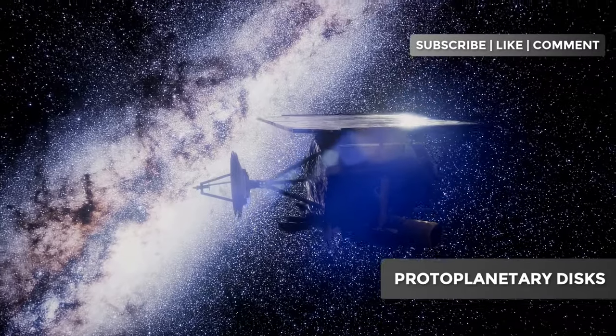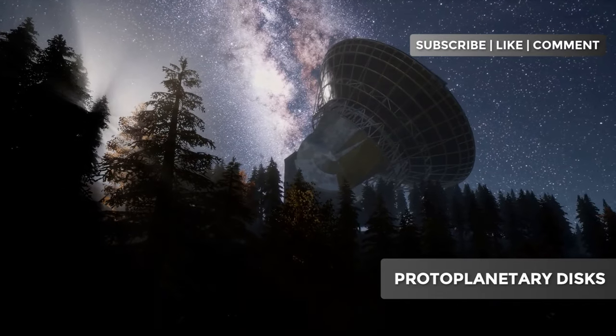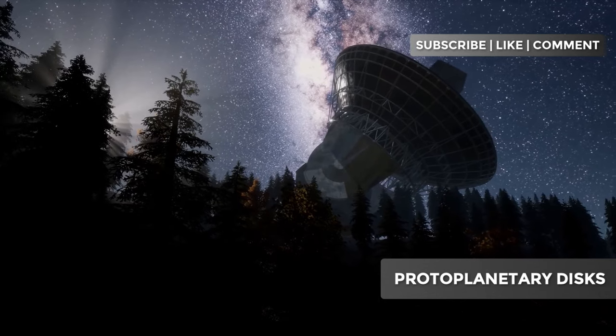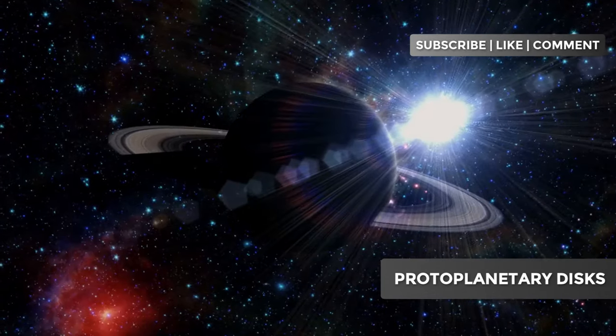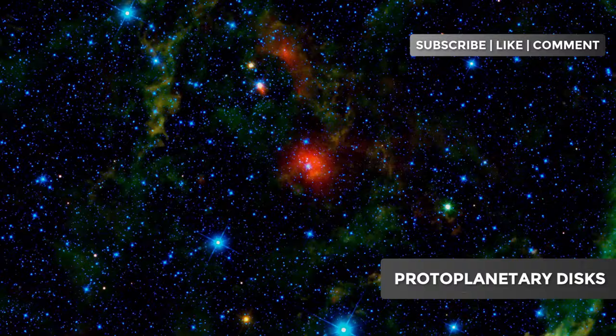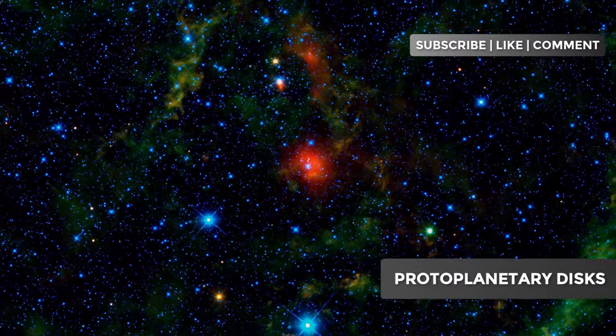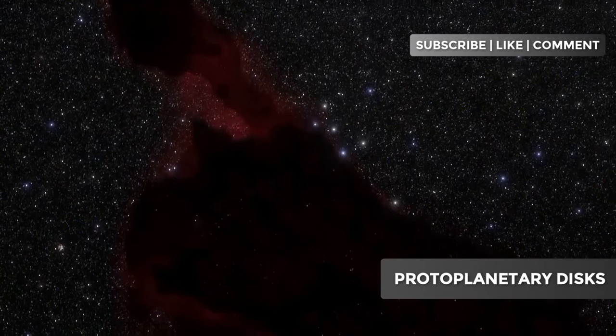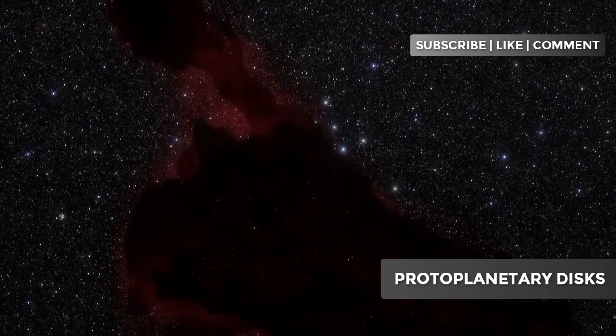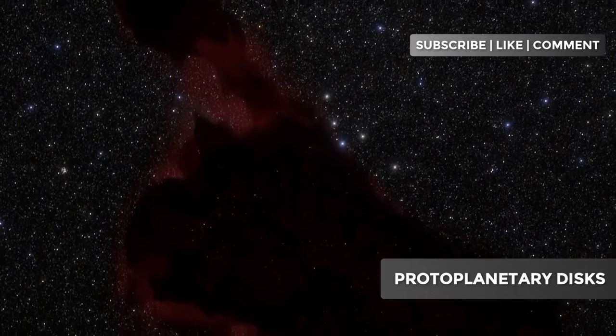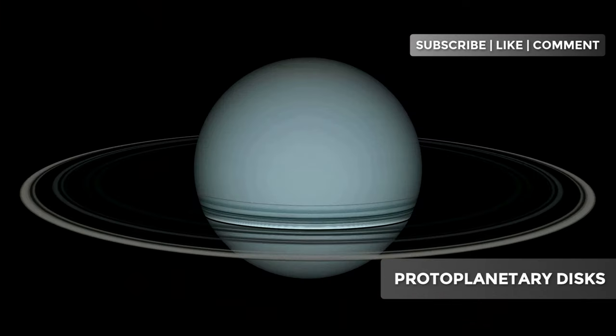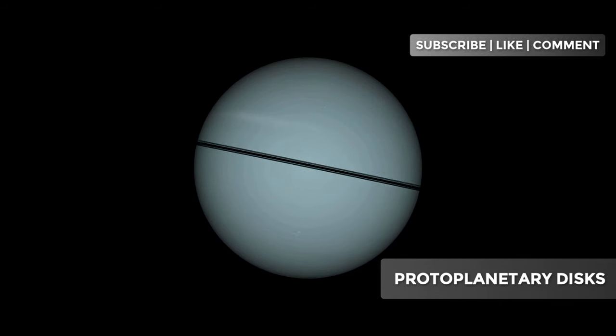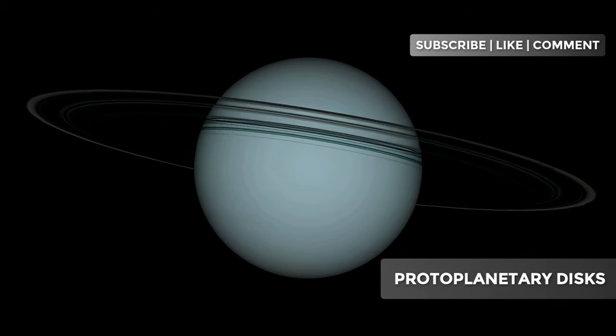Over the years, astronomers have identified and studied several notable protoplanetary disks, each offering unique insights into the process of planetary formation. Let's explore some of the most famous planet nurseries we know. One of the most celebrated is the disk around the star HL Tauri in the constellation Taurus. The images of this disk captured by ALMA in 2014 surprised the scientific community with their sharpness and detail. The HL Tauri disk displays a series of concentric rings and gaps, suggesting the presence of forming planets sculpting the disk.